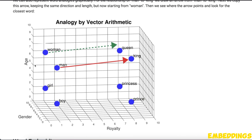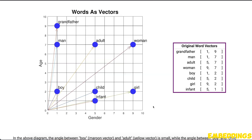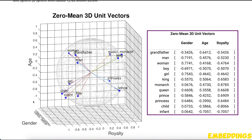You might be thinking that yes, this makes sense. However, these features that we see here are ones that we define manually. But we can train neural networks which will come up with different feature representations while preserving the semantic meaning of different words or sentences. These multidimensional feature vectors are actually called embeddings.